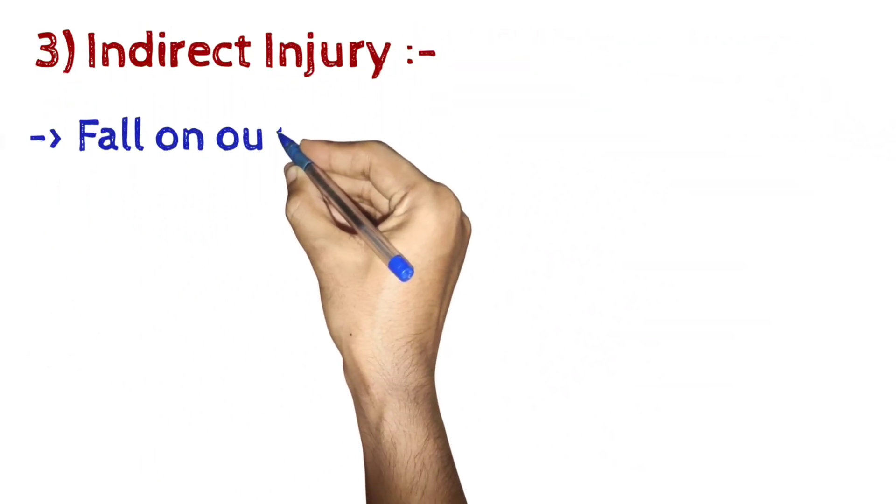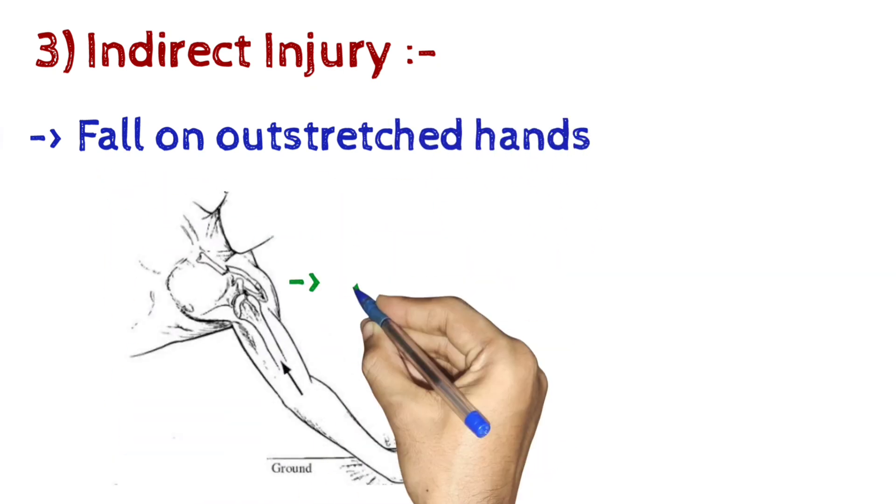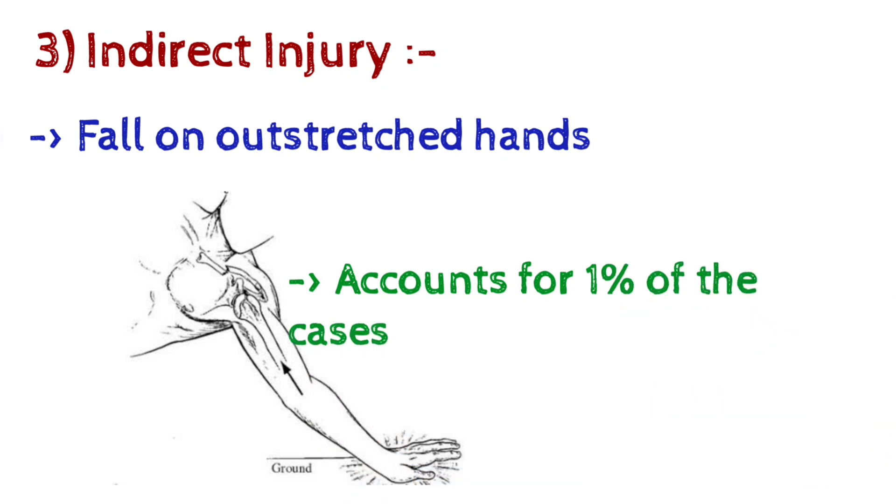3. Indirect injury from fall on outstretched hands accounts for 1% of the cases.